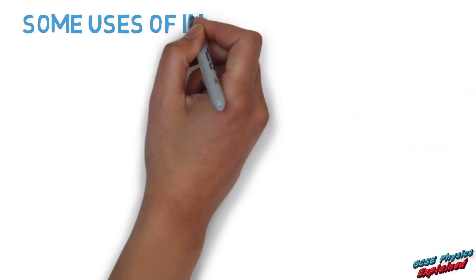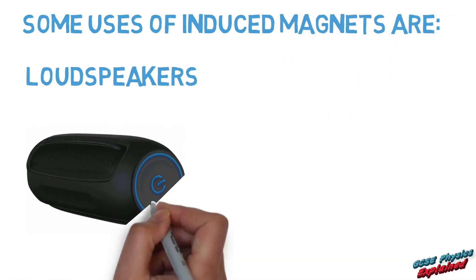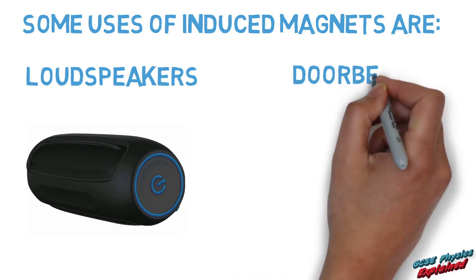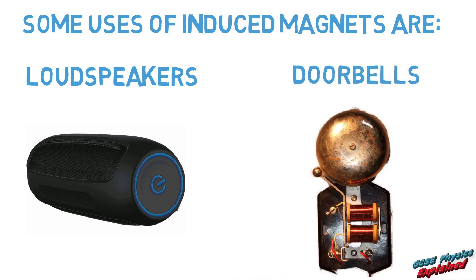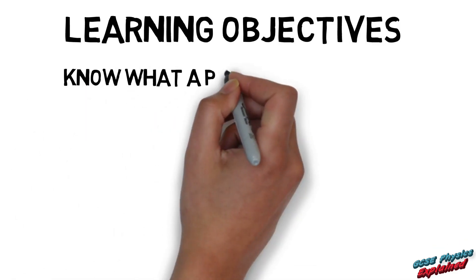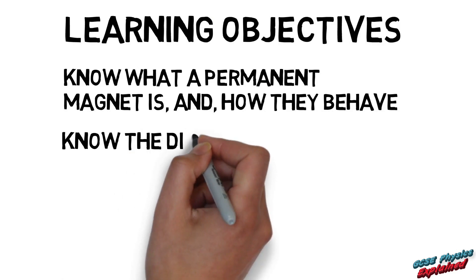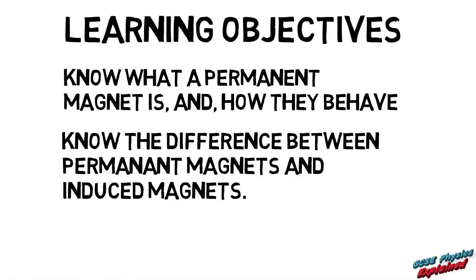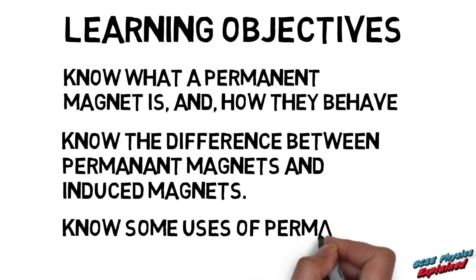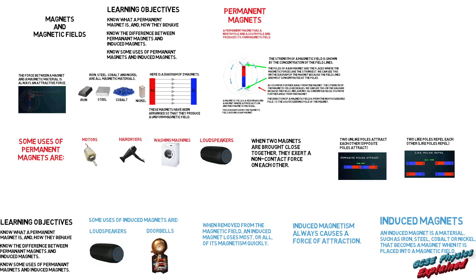Some uses of induced magnets are loudspeakers and doorbells. So now you should know what a permanent magnet is and how they behave, know the difference between permanent magnets and induced magnets, and know some uses of permanent magnets and induced magnets. Thanks very much, hope you learned a lot from that. See you in the next one.